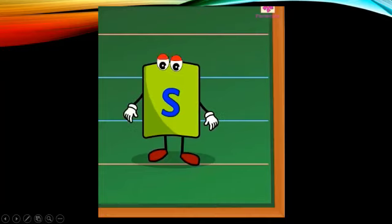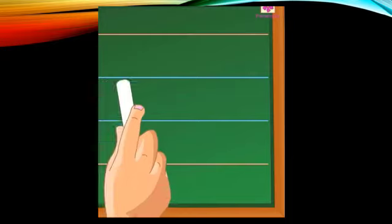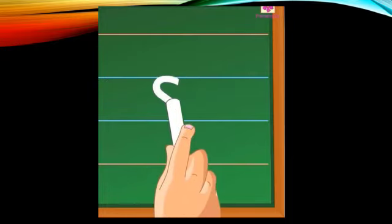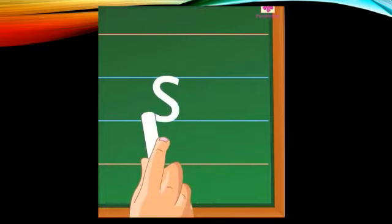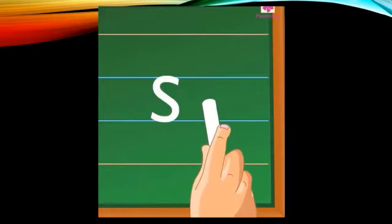Now let's see how to write letter S. Make a semi-circle to the left within the grass line and to the right. S.